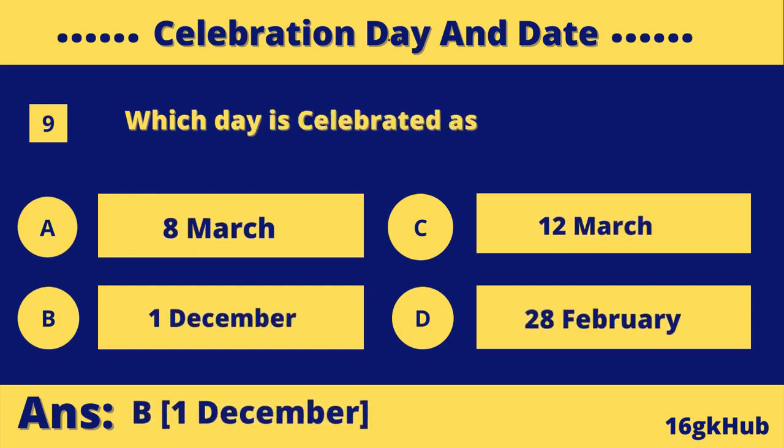Which day is celebrated as World AIDS Day? Option A: 8th of March. Option B: 1st of December. Option C: 12th of March. Option D: 28th of February. The correct answer is Option B: 1st of December.